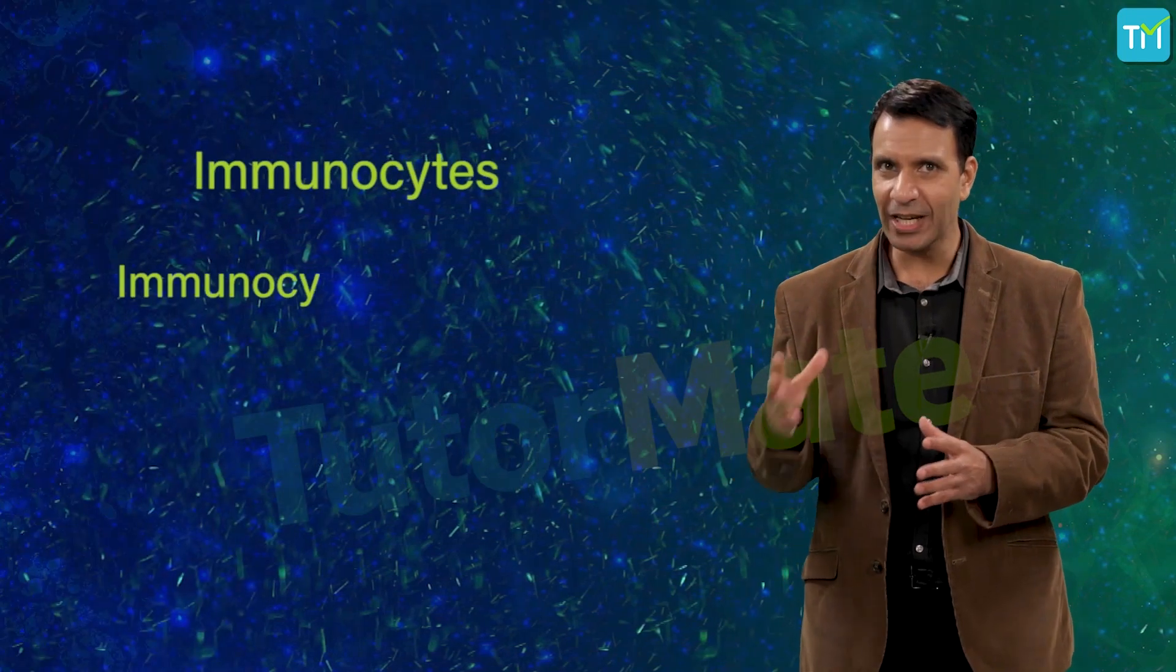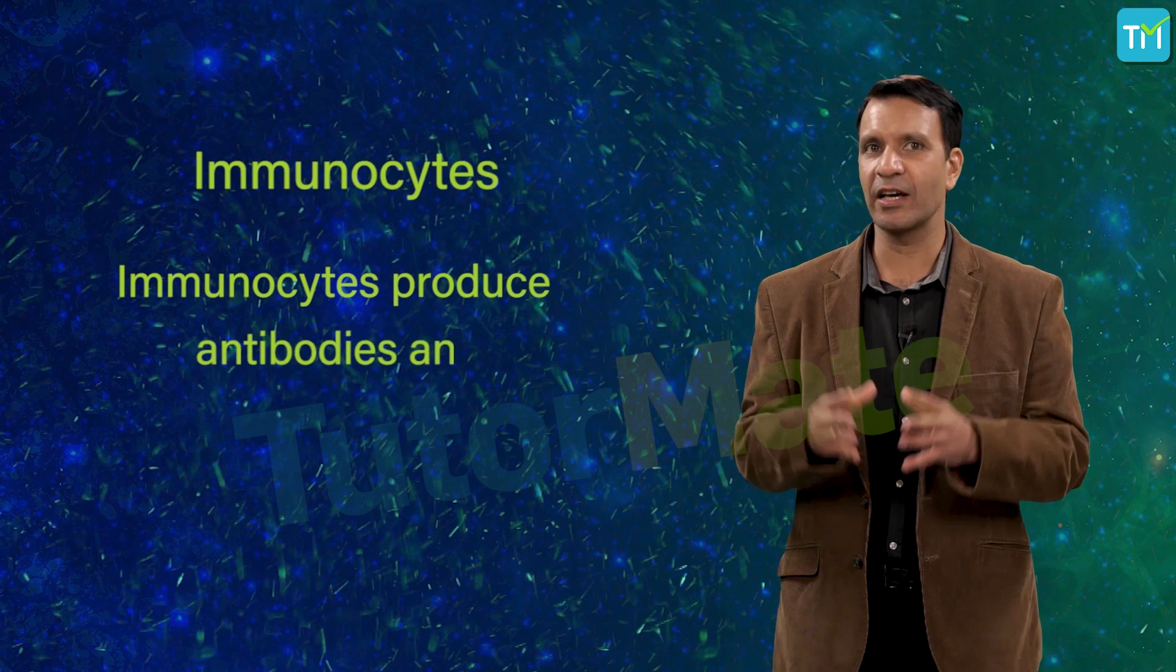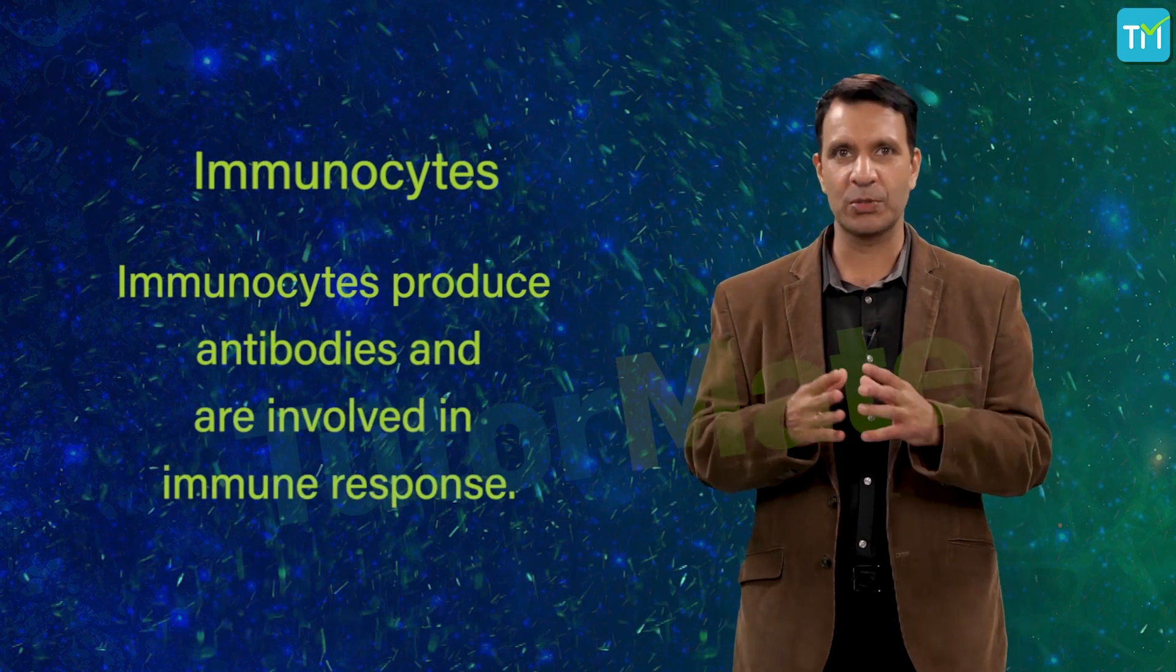On the other hand, agranulocytes have no cytoplasmic granules. After phagocytes, let's find out about the other type, immunocytes. Immunocytes produce antibodies and are involved in immune response. So when you fall sick, immunocytes produce antibodies, and these antibodies fight with the microorganism causing the disease to cure you.